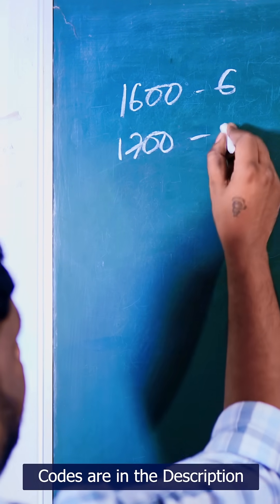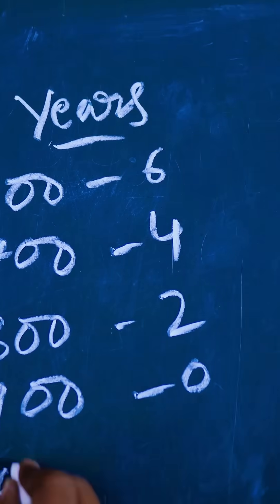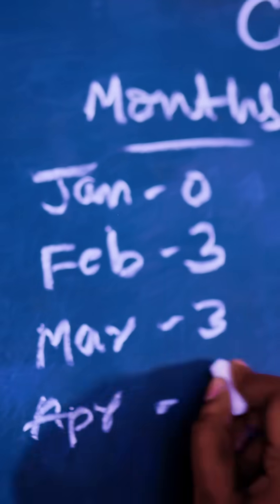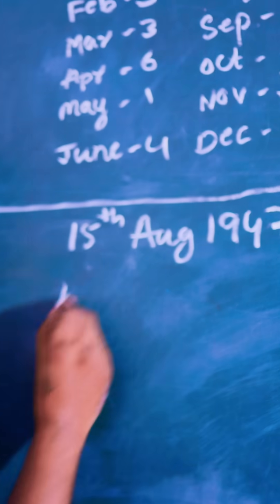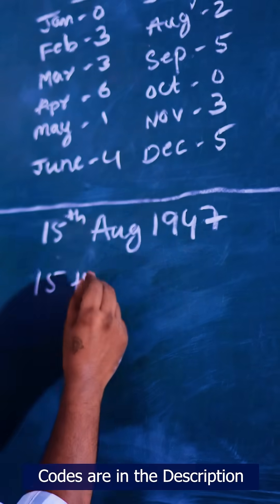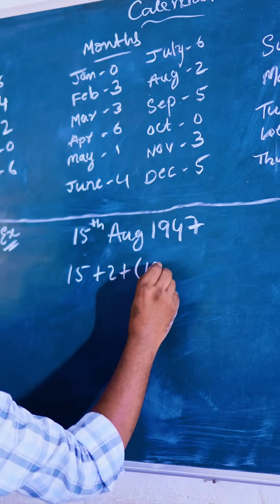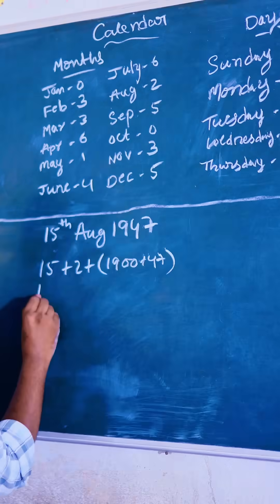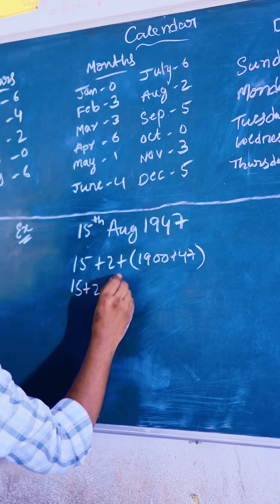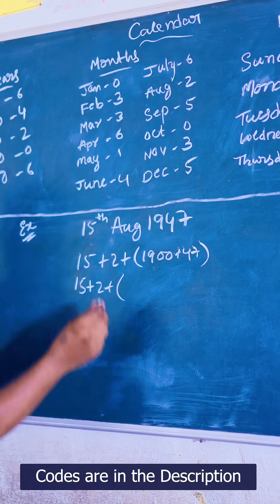These are the codes I'm writing here. The days are 15 plus August code is 2 plus 1947. So 1900 plus 47 years. So 15 plus 2 plus 1900 code is 0, so we should write here 0 plus 47.